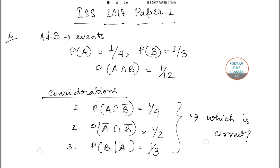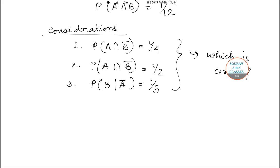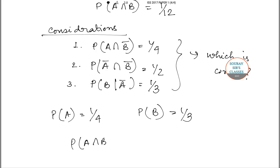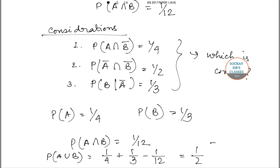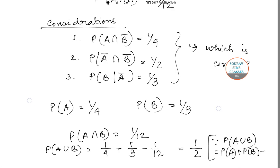Let's approach the sum. We are given that probability of A equals one by four, probability of B equals one by three, and probability of A intersection B equals one by twelve. Probability of A union B equals one by four plus one by three minus one by twelve, which equals one by two. As we know, P(A∪B) = P(A) + P(B) − P(A∩B).